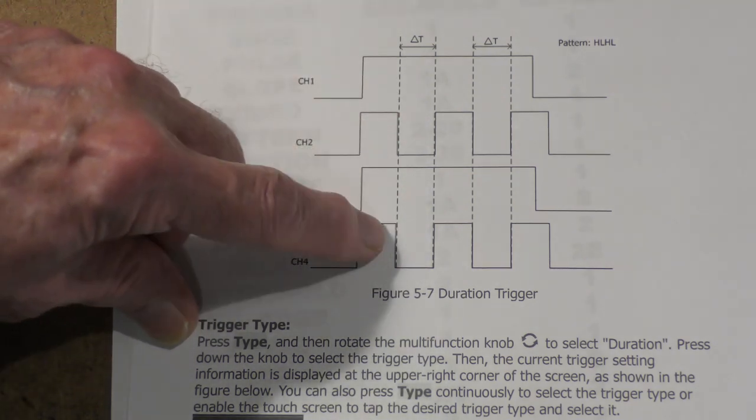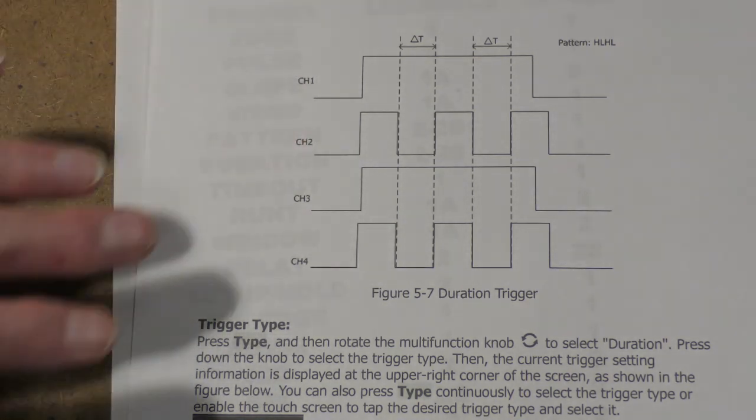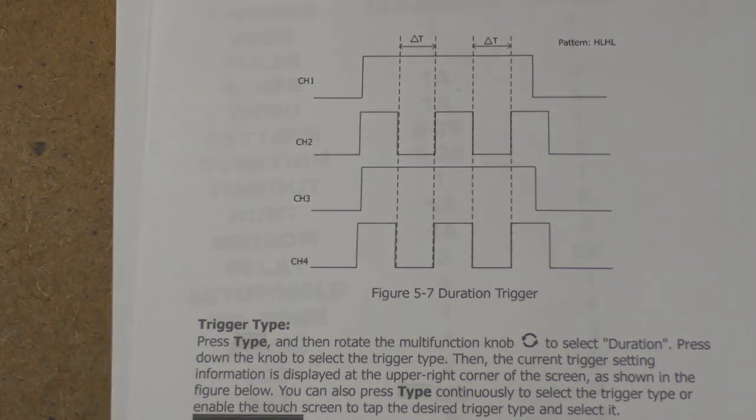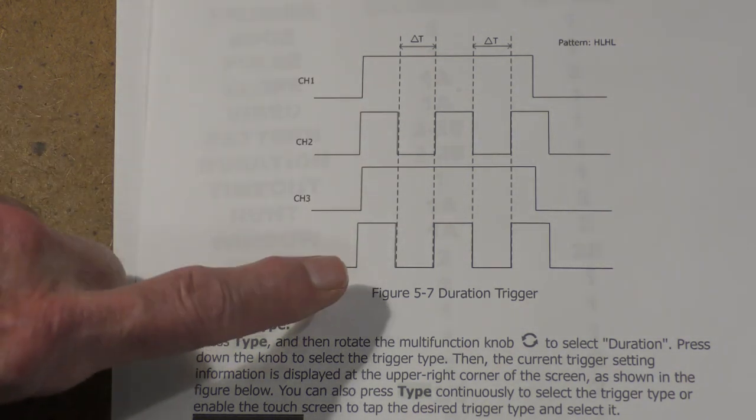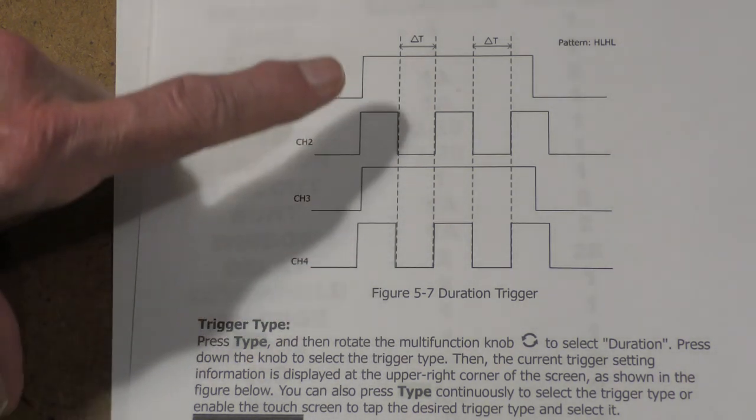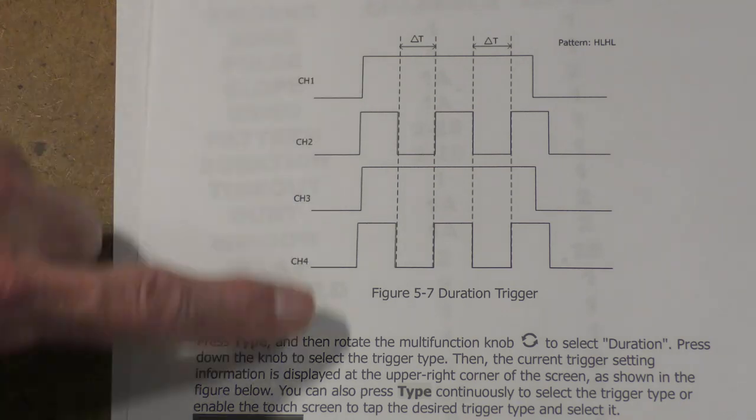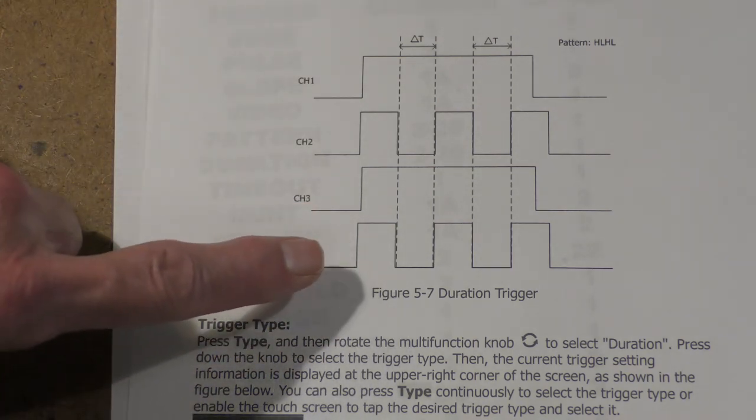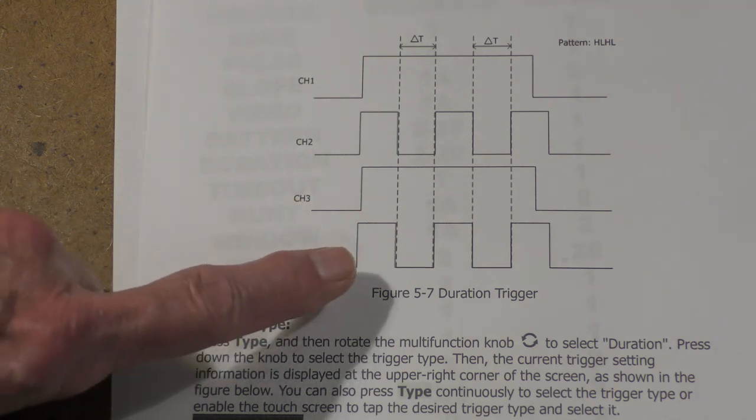So you set the duration to 100 nanoseconds and you set the pattern to high, high, high, high. Now these channels can be the analog channels, they can be the digital channels, or they can be all of the channels, in other words all 20 channels. And for those channels that you don't want the pattern to interact, you can put a don't care.